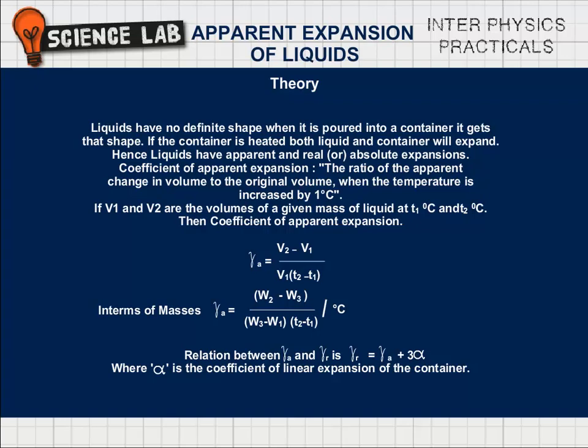Coefficient of apparent expansion: The ratio of the apparent change in volume to the original volume when the temperature is increased by 1 degree centigrade. If V1 and V2 are the volumes of a given mass of liquid at T1 degrees centigrade and T2 degrees centigrade, then coefficient of apparent expansion, gamma A equals V2 minus V1 by V1 into T2 minus T1 per degree centigrade.